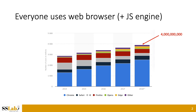These days, everyone may use a web browser to send email, transfer money, and find information on the web. Around 4 billion users are using web browsers in the world. As every major web browser embeds a JavaScript engine inside, it means a huge number of people will be affected if the JavaScript engine has a security-critical bug.